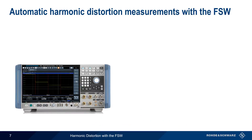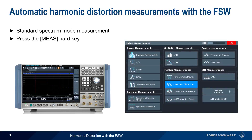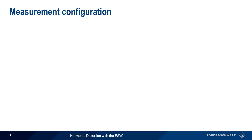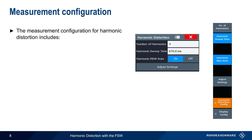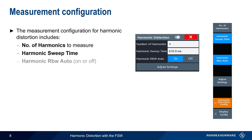On the FSW, harmonic distortion is one of the standard spectrum mode measurements. Just press the Measure hard key and select harmonic distortion from the list of available measurement types. The parameters needed for harmonic distortion measurement include the number of harmonics to measure, the sweep time or measurement time, and whether or not the resolution bandwidth should be automatically adjusted. We'll come back to these last two parameters momentarily.